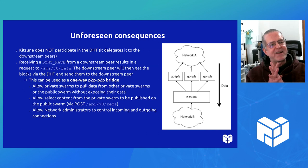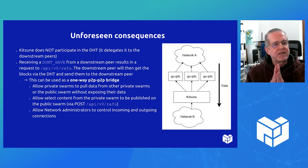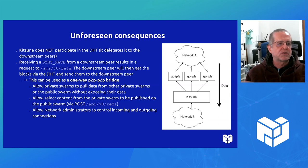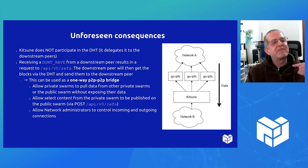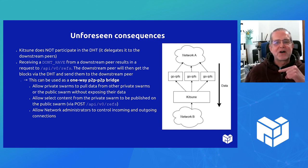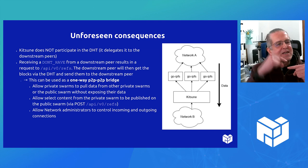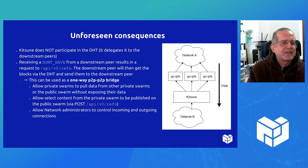There was one unforeseen consequence of this. Kitsune does not participate in the DHT — it's only doing BitSwap, plus the identify and ping protocols, the basic libp2p protocols. What's interesting is that when I get a don't-have message from the downstream peer, Kitsune will call API v0 refs and have the GoIPFS node query the whole DHT, which is basically what's also needed for JSIPFS.